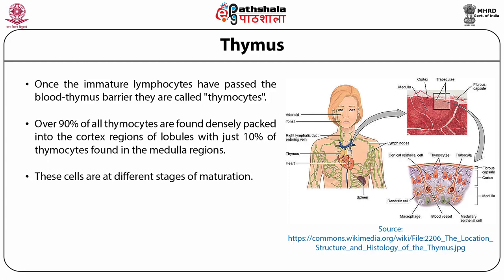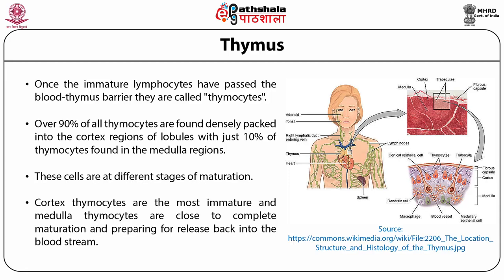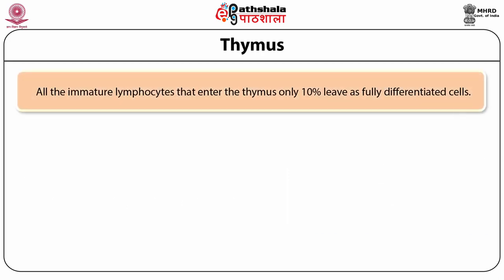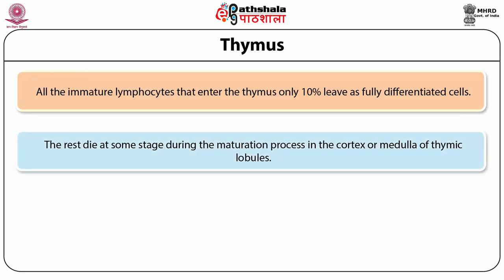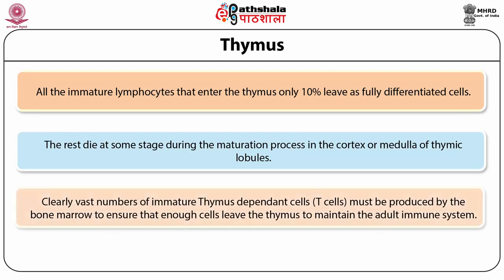These cells are at different stages of maturation. Cortex thymocytes are the most immature, and medulla thymocytes are close to complete maturation, preparing for release back into the bloodstream. Of all the immature lymphocytes that enter the thymus, only 10% leave as fully differentiated cells. The rest die at some stage during the maturation process in the cortex or medulla. A vast number of immature thymus-dependent cells must be produced by the bone marrow to ensure enough cells leave the thymus to maintain the adult immune system.